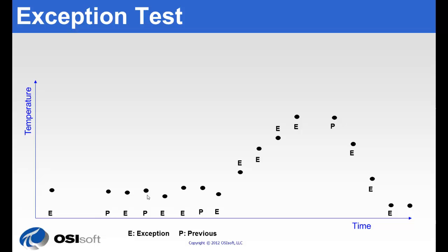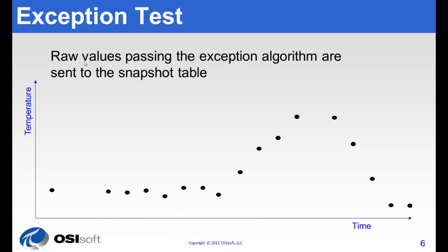One other note to make: we've kept the previous value here. This is important so that we can fully preserve the fidelity of the data later on. But here we have all the raw values that pass the exception algorithm and were sent to the snapshot table.